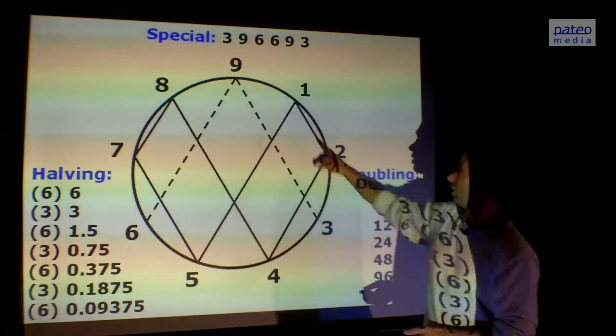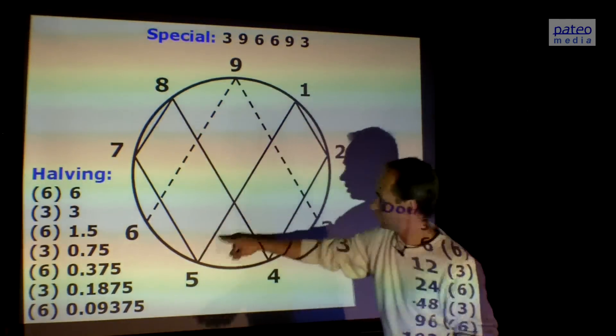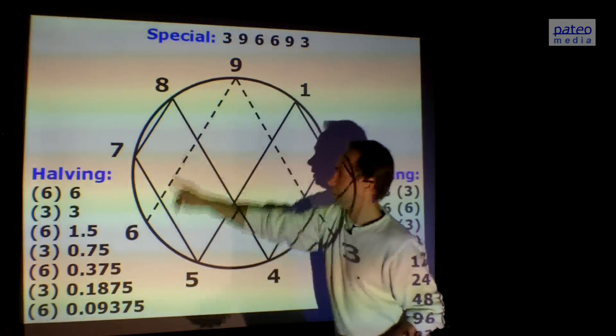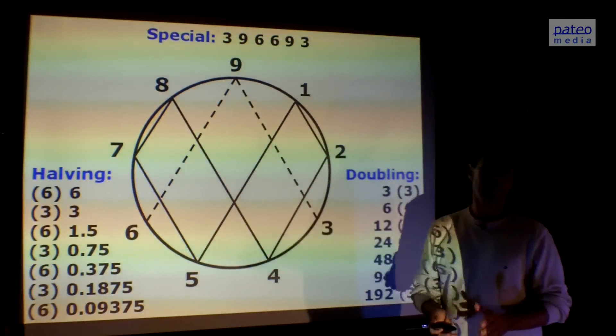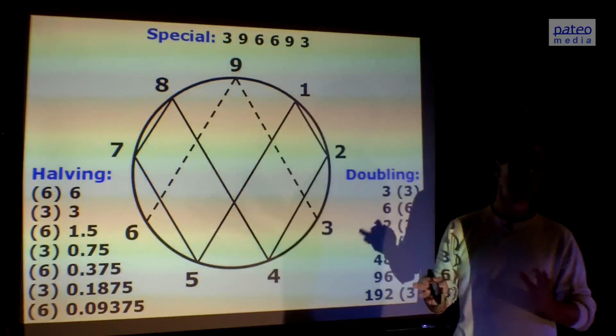So in fact, we have three rhythms. One rhythm going like this. Other rhythm is going like this. And the third rhythm is going like this all the time. That is in fact what this symbol is representing. Three different rhythms.